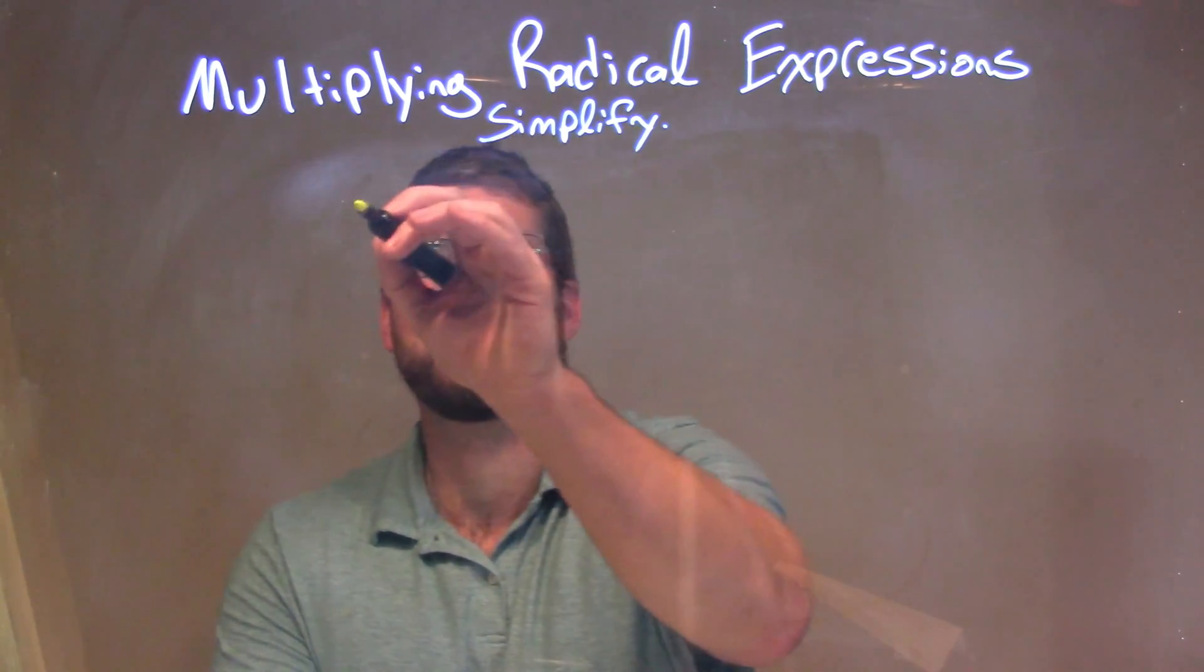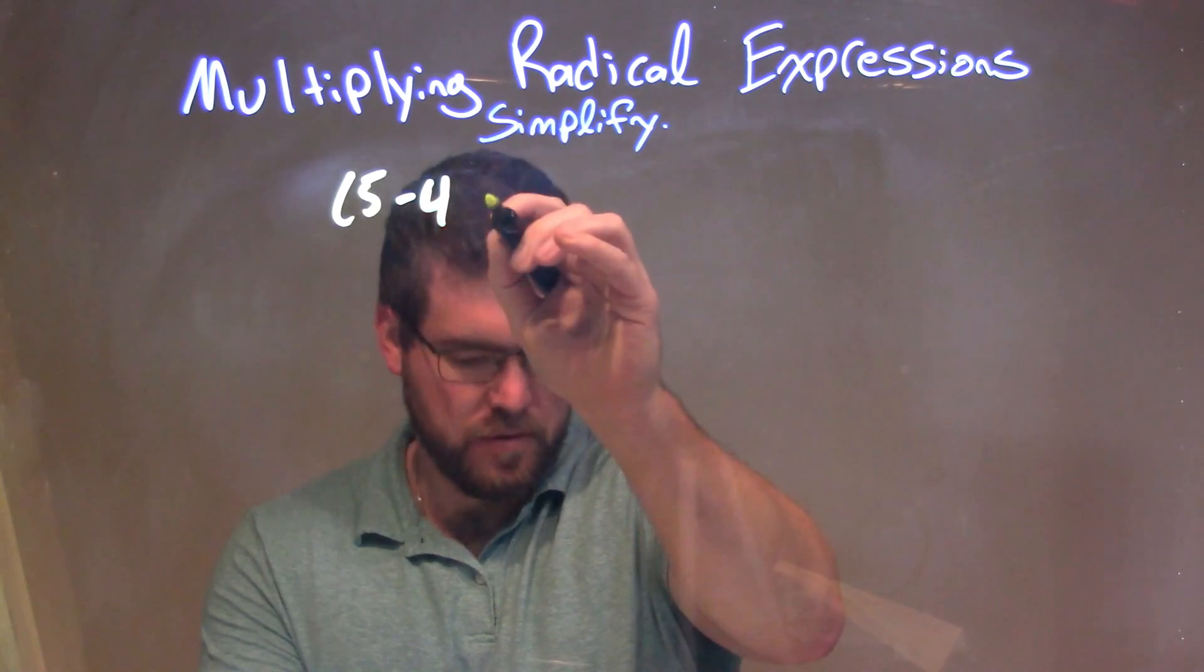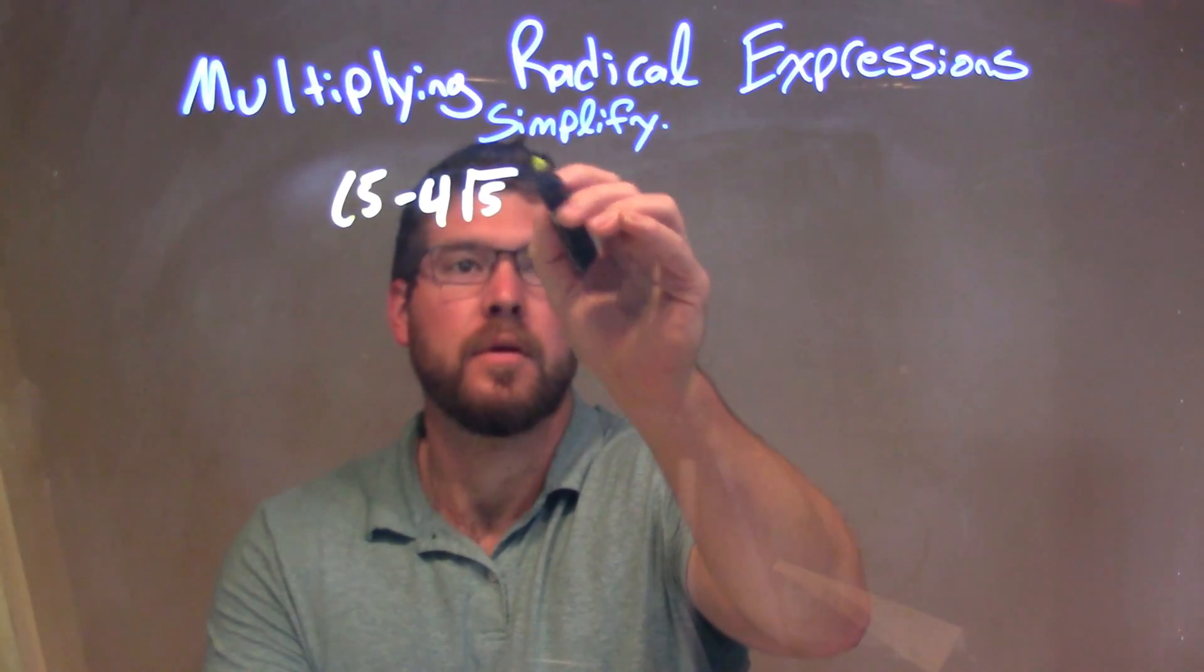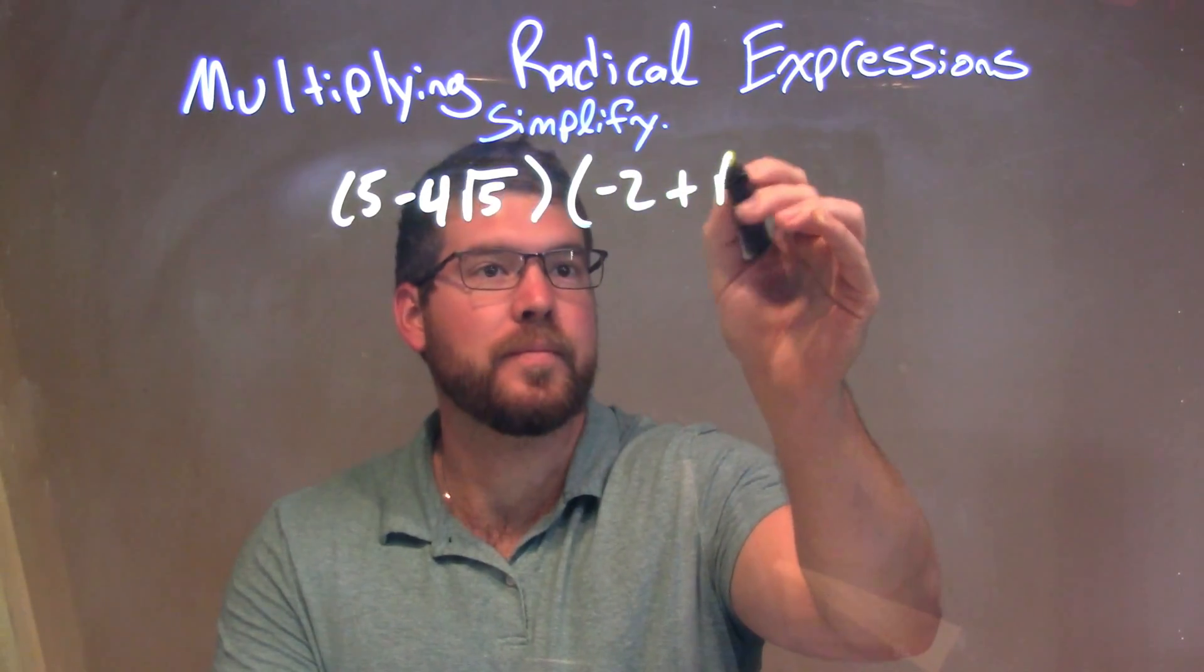So if I was given this expression, 5 minus 4 square root of 5, times negative 2 plus the square root of 5.